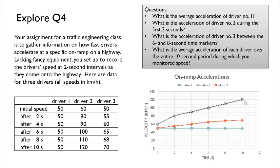And finally, driver three. Driver three starts off at 50 kilometers per hour and over the course of four, six, eight, and ten seconds increases in velocity through 55, 60, 65, 68, and 70.